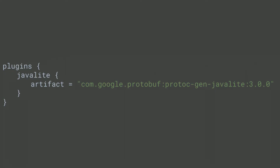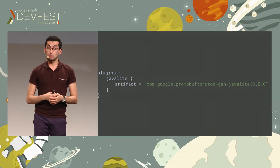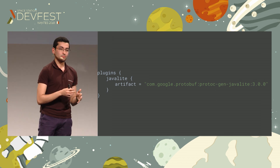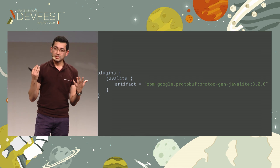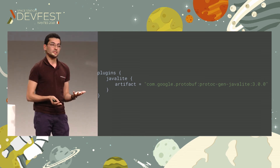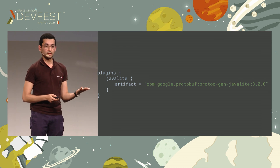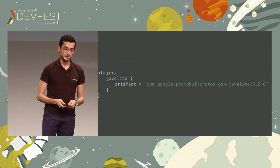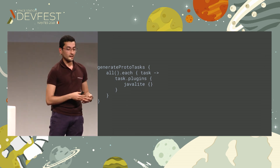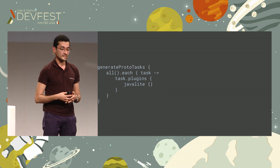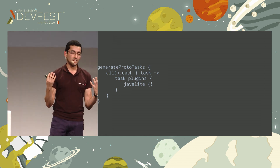My advice: use Java Lite for every Java project. The main difference between the regular one and the Lite one is that the regular one has some more modules related to reflection, for example. Go with Java Lite unless you need some other modules from the regular Java plugin, and then switch to it. Then, to make your code generation work, you have to configure some Gradle tasks — generate proto tasks — otherwise it won't work.